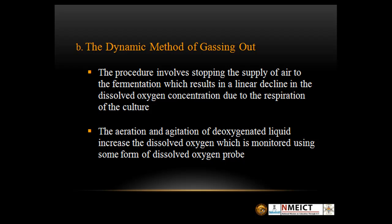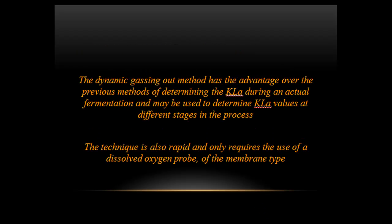The dynamic method of gassing out involves dropping the supply of air into the fermentation, which results in a linear decline in the dissolved oxygen concentration due to the respiration of the culture. The aeration and agitation of the deoxygenated liquid then increase the dissolved oxygen, which is monitored using a dissolved oxygen probe. The dynamic gassing out method has the advantage of determining the KLA value during an actual fermentation and may be used to determine the value at different stages in the process. This technique is also rapid and only requires the use of a dissolved oxygen probe of the membrane type.